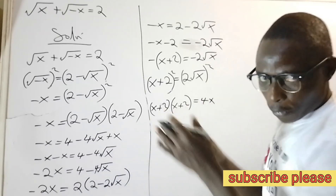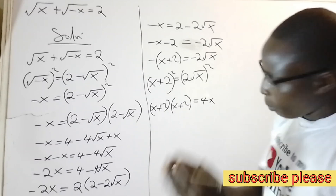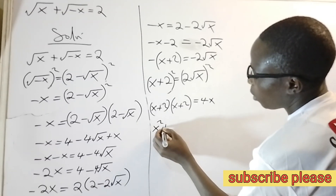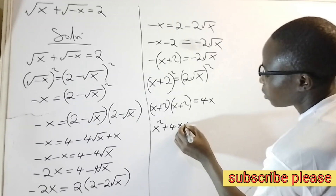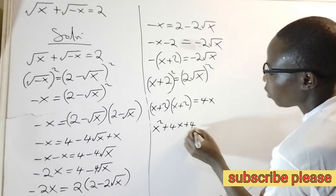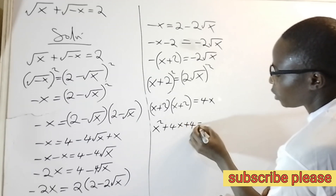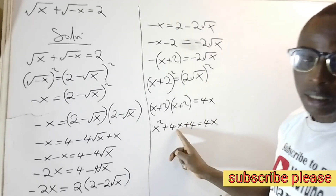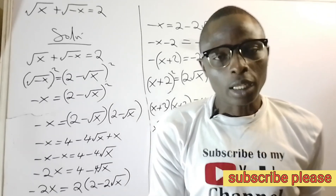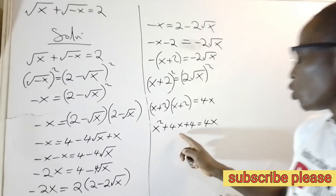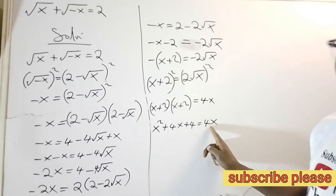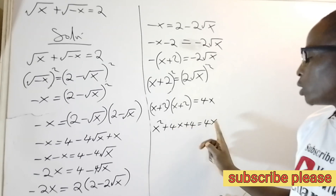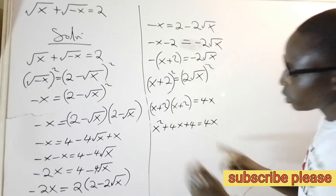Multiplying out the brackets: x squared plus 4x plus 4 equals 4x. I have positive 4x on the left and positive 4x on the right, so these cancel each other out.